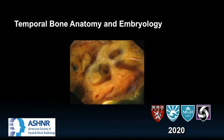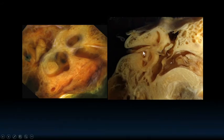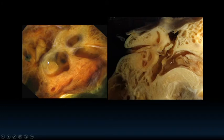Hello everybody. My name is Hugh Curtin and we're going to be talking about temporal bone anatomy and embryology — mostly about the anatomy, but we'll put in a little bit of embryology that applies to some of the pathologies we see. The temporal bone is a pretty complex structure with nooks and crannies, and it's really not organized for us to understand it very well, but we're going to try to simplify it for sectional imaging.